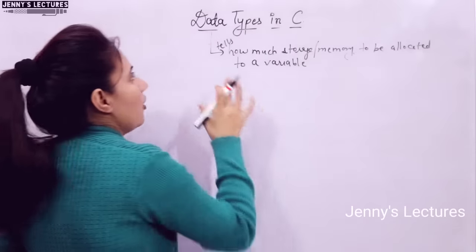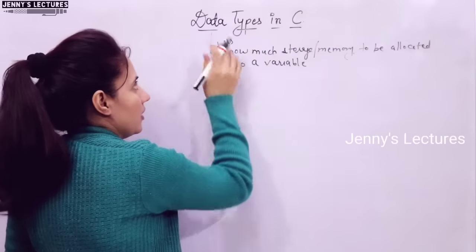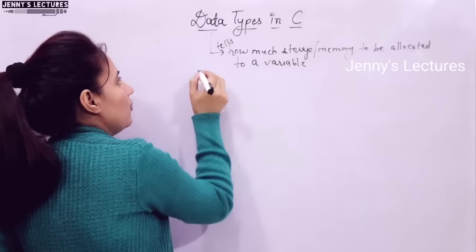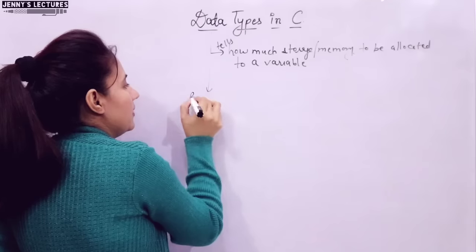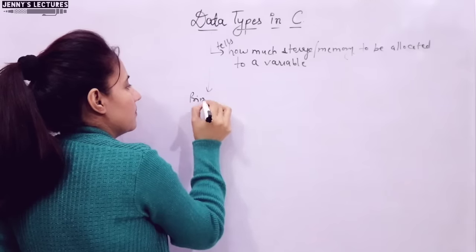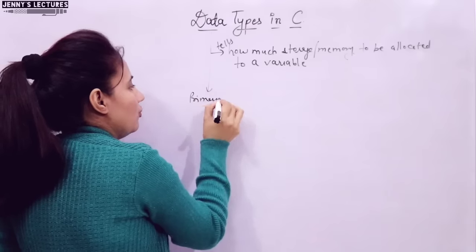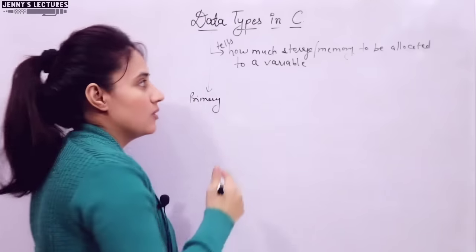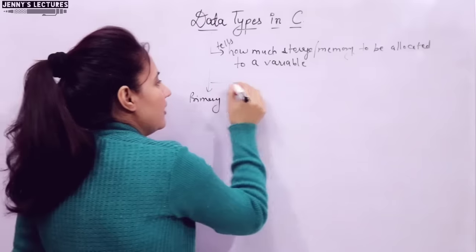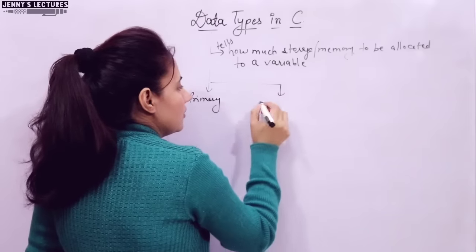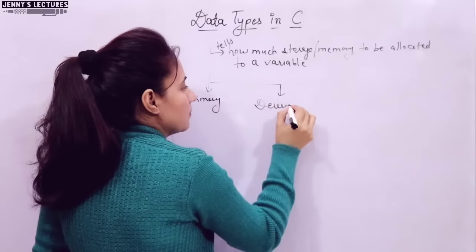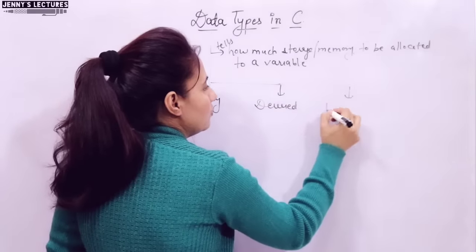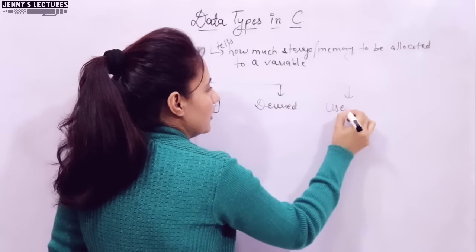How many types of data types are there? First, we have primary data types, also called fundamental data types or basic data types. Second, we have derived data types. And third, we have user defined data types.